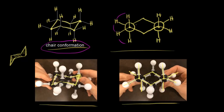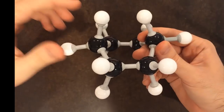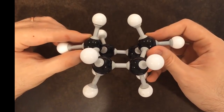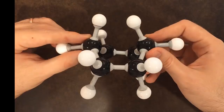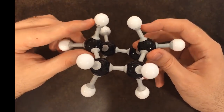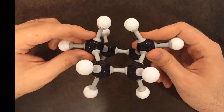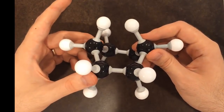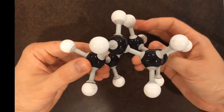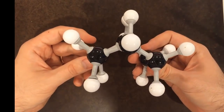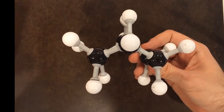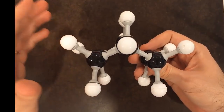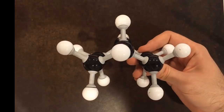Next we'll take a look at the boat conformation. Here we have the boat conformation of cyclohexane, and if you look at the carbons, it looks a little bit like a boat. There are a few things that destabilize the boat conformation. One of them is these top hydrogens here — they're close enough to get in the way of each other, and that's called flagpole interaction, which increases the strain. If we look down these two carbons — the one in the back and the one in front — we'll see the boat conformation from a Newman projection viewpoint, which reveals torsional strain from eclipsed hydrogens.